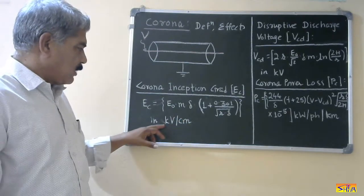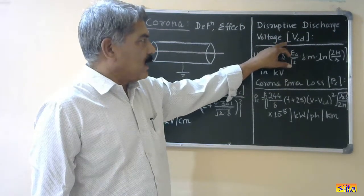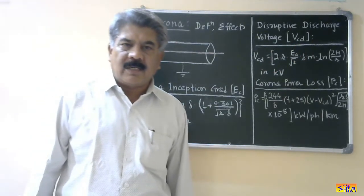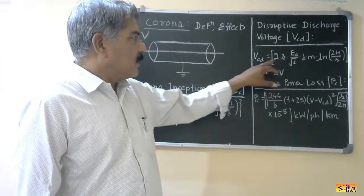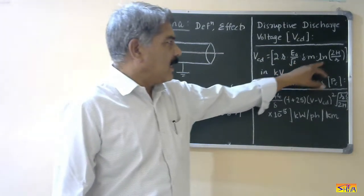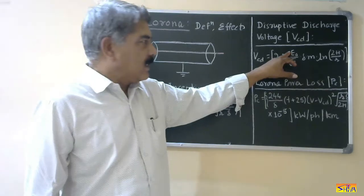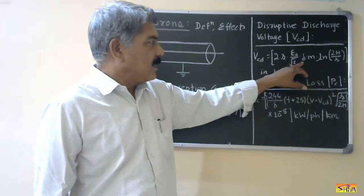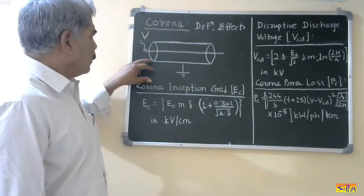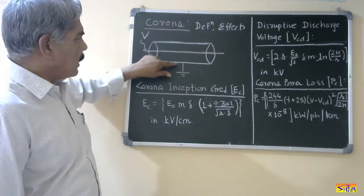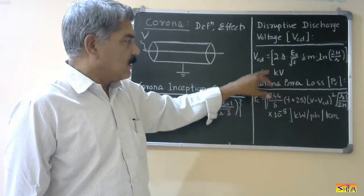The second term is disruptive discharge voltage, also called critical discharge voltage, denoted by V_CD. It is the minimum voltage required to generate visual corona in air. The formula is: V_CD = (√2 · r · E₀) / (√2 · δ · m) · ln(2h/r). Here, r is the radius of the conductor, E₀ is 30 kV per centimeter, m is the surface factor, δ is the air density correction factor, and h is the distance of the conductor from the ground. The cage is grounded, so h is the height from the ground to the conductor. When computed using this formula, V_CD is expressed in kV.